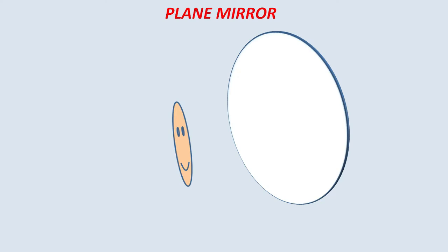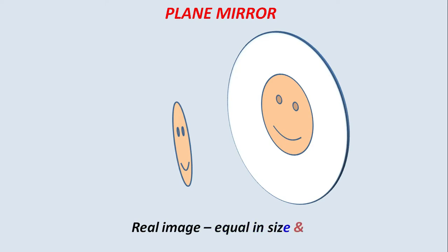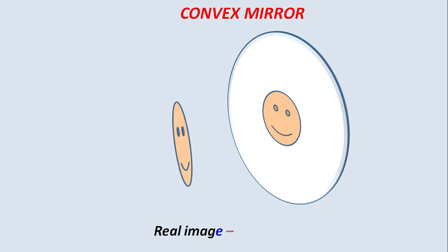The image appearing on the plane mirror will be exactly the same as the real one — equal in size and equal in distance. Now let us move to the next one: the convex mirror. If a person stands in front of a convex mirror, the image appearing will be smaller than the actual one. The image formed on the convex mirror is smaller in size than the real one.